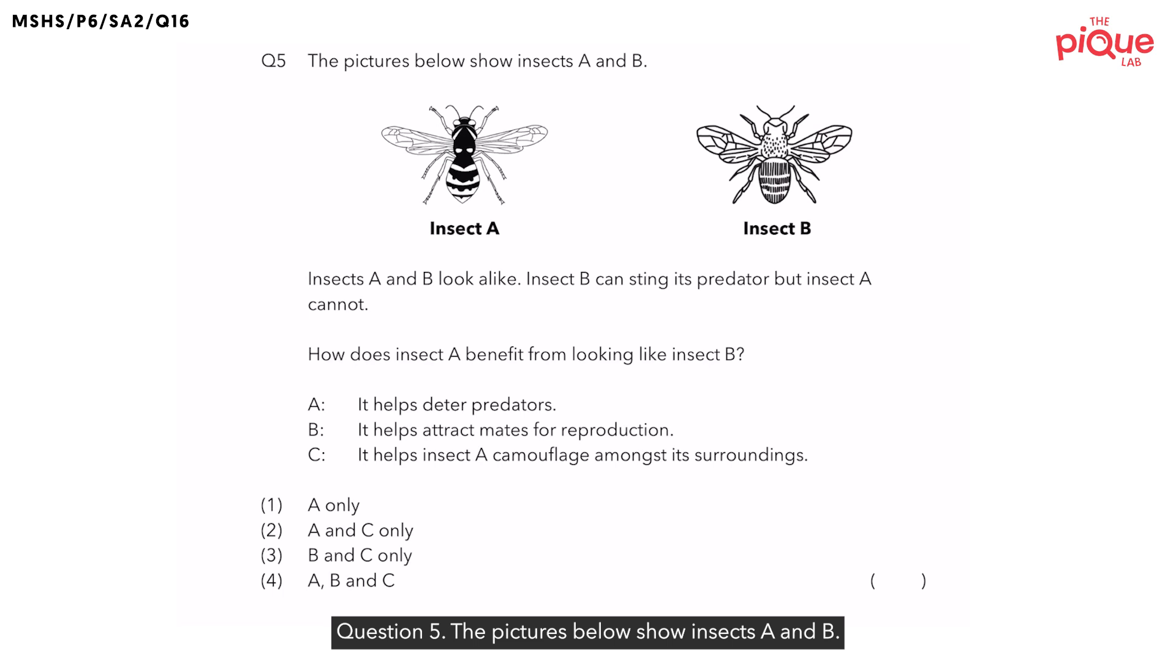Question 5. The pictures below show insects A and B. The question tells us that insects A and B look alike. Insect B can sting its predators but insect A cannot. How does insect A benefit from looking like insect B?